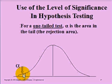If I'm testing at the 5% level of significance, this tail would contain 5% or alpha of the area under the curve.